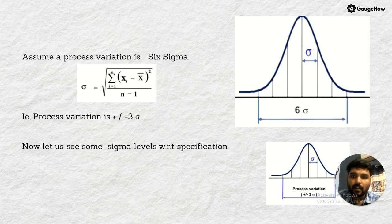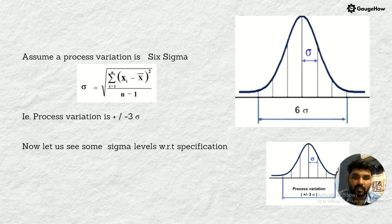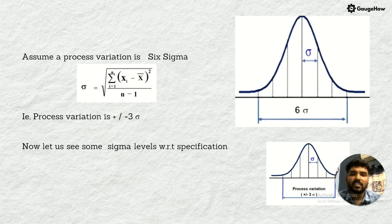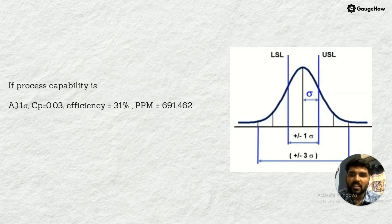The Six Sigma principles are an efficient way to save money, human resources, and time by avoiding all the quality concerns and redundant processes which affect any kind of process. This is the formula of Six Sigma calculation. The process variation will be plus or minus three sigma. Now let us see Six Sigma level with respect to the specification.